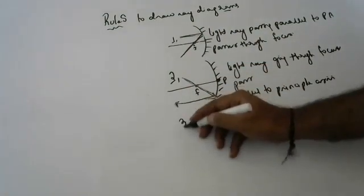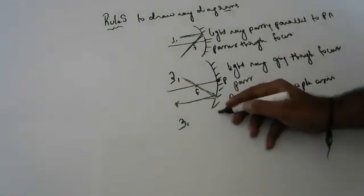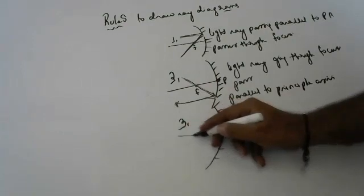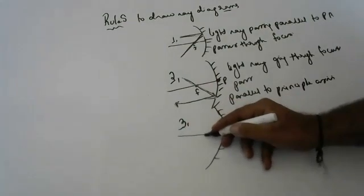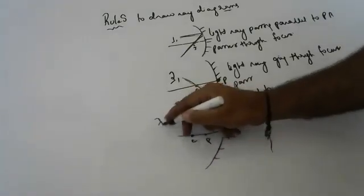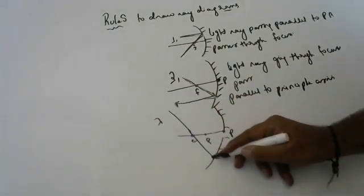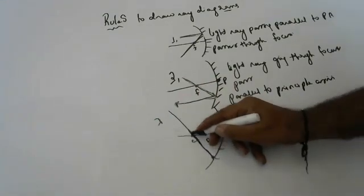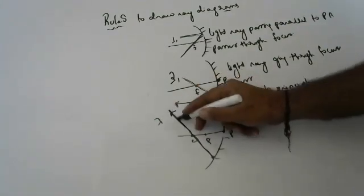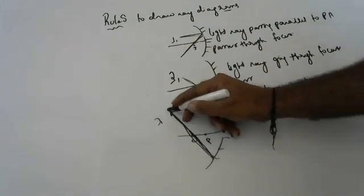This is the third rule — second rule confirmed. Now, what is the third rule? Third rule states that any light ray going through the center of curvature — after reflection — retraces its path, going again in the same direction.